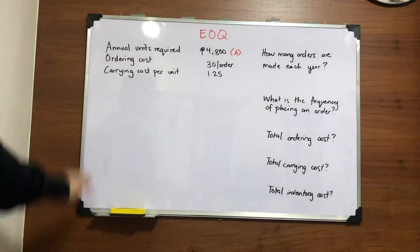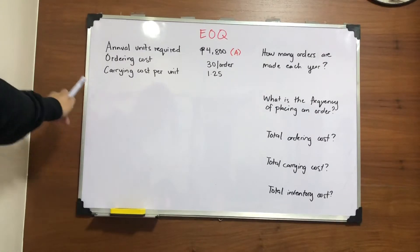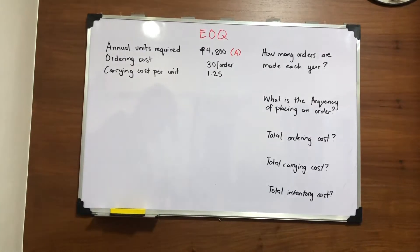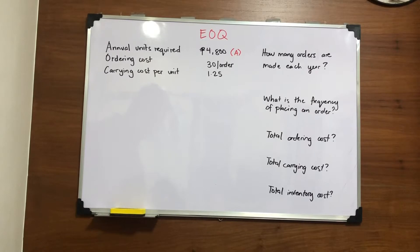Your carrying cost per unit includes your cost of storage, insurance, inventory taxes, obsolescence, spoilage, and pilferage or theft, as well as the opportunity cost of funds tied up with the inventory and handling costs.